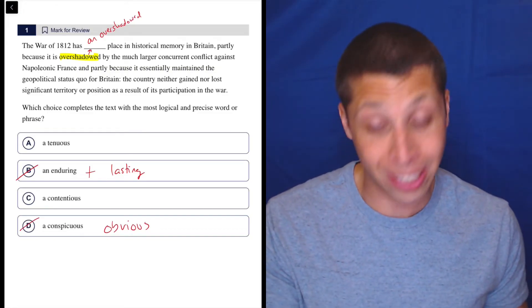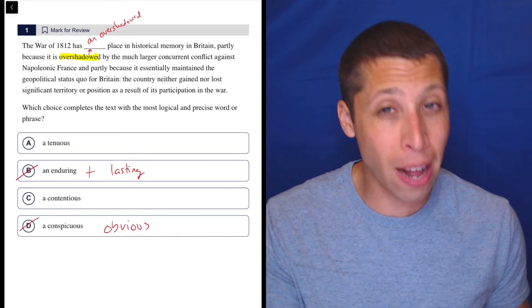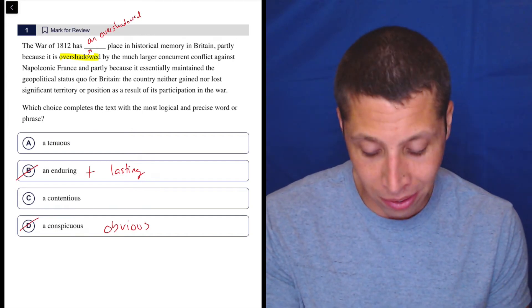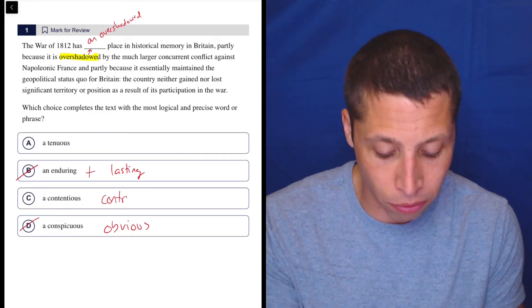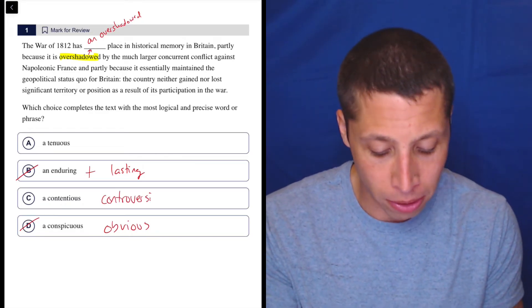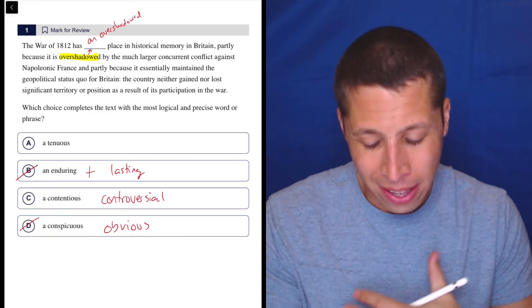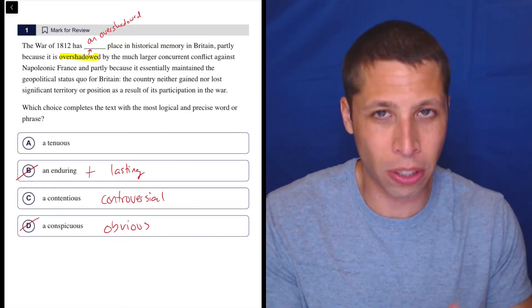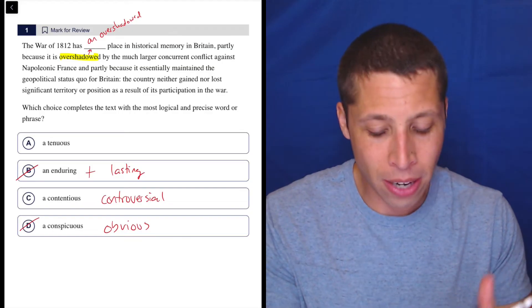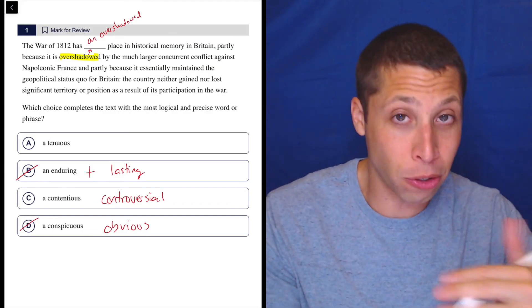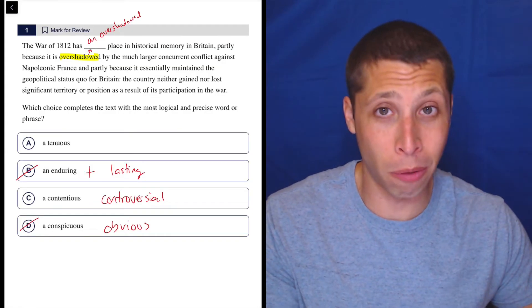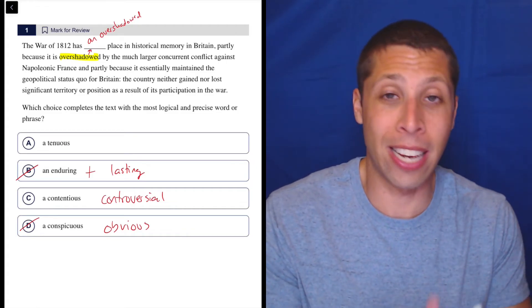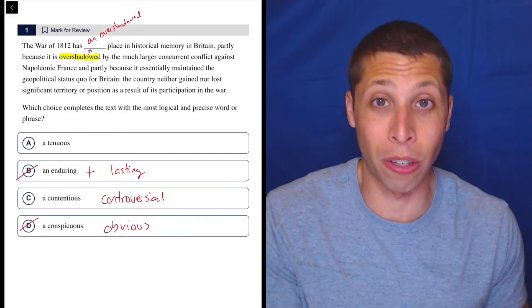I have a feeling a lot of you are going to pick the word contentious because it maybe sounds a little bit more familiar and also it does have to do with war. If something is contentious, it's controversial. It's debatable. That maybe makes sense because they're talking about war, but there's nothing controversial here. There's nothing that they're debating. They're not saying some people think, but others disagree that the War of 1812 has been overshadowed. They're just saying that's what it is. There is no debate about it.